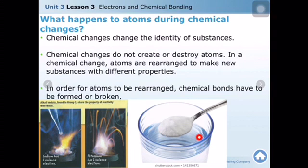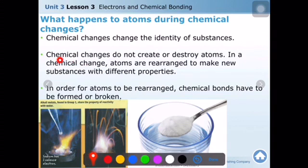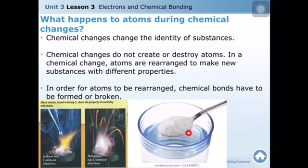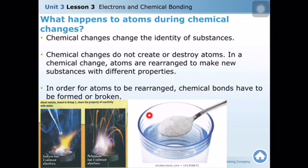Chemical changes do not create or destroy atoms. In a chemical change, atoms are rearranged to make new substances with different properties. For example, when you put salt in water it separates into ions — you haven't destroyed any atoms, they are just rearranged. When you burn wood, the atoms are not lost and the total mass is not lost.